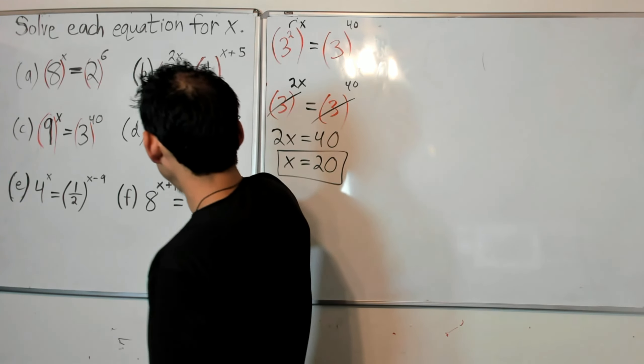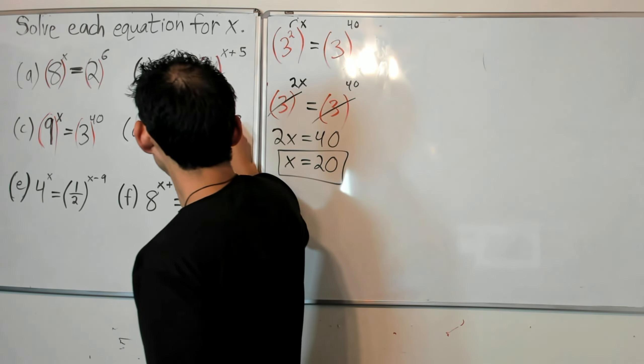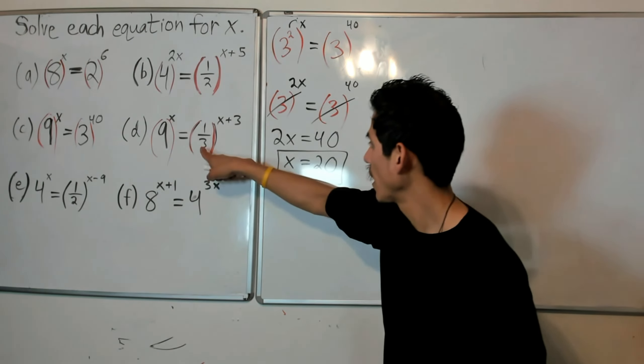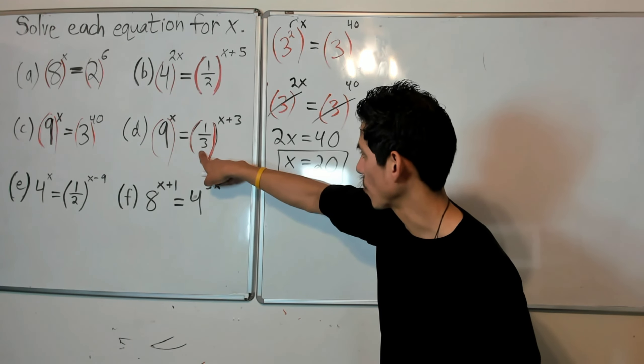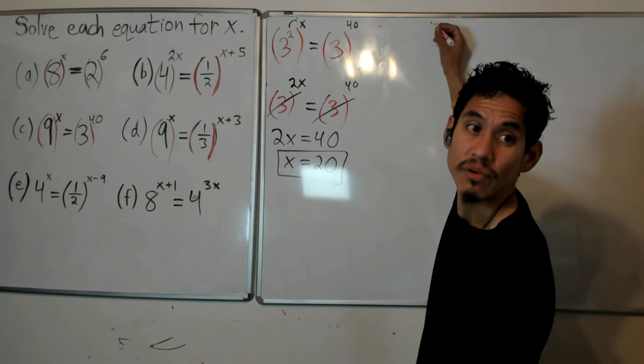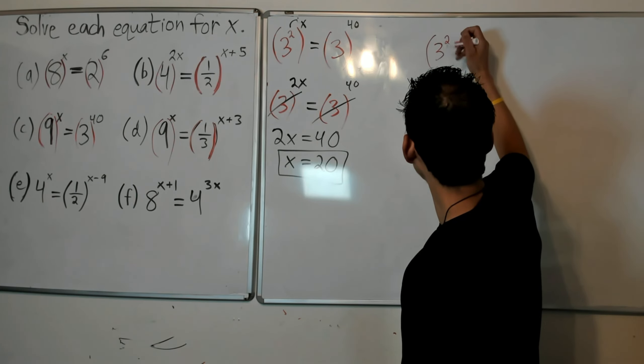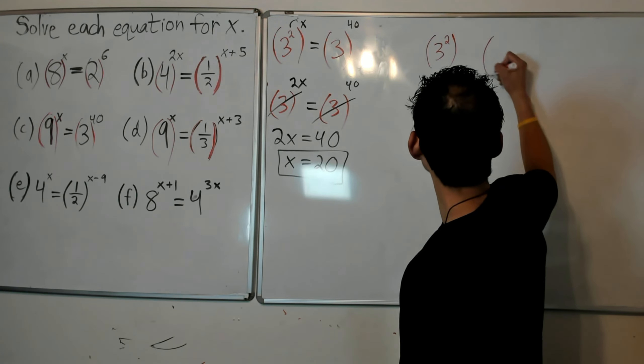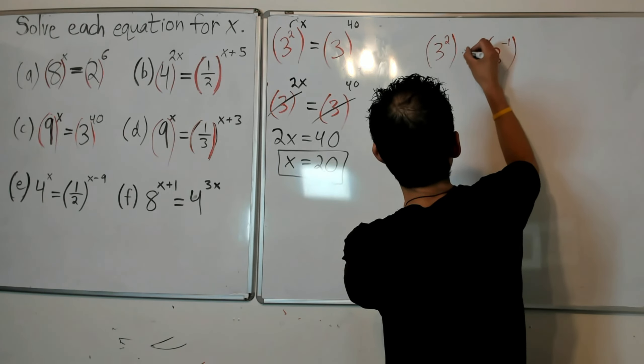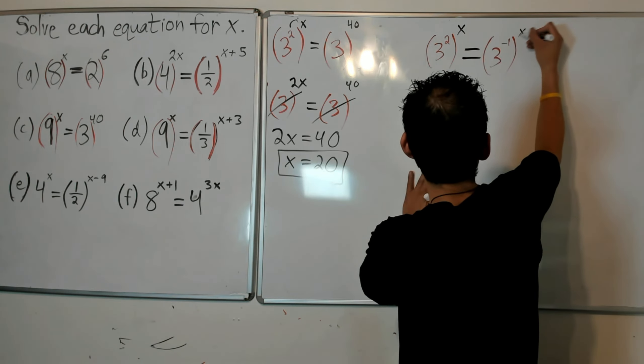Alright, so my bases are 9 and 1/3. So if you remember this one, how we wrote 1/2 as 2 to the negative 1, I can write 1/3 as 3 to the negative 1. And 9, that's 3 squared again. So we have 3 squared on the left, and on the right I got 3 to the negative 1.